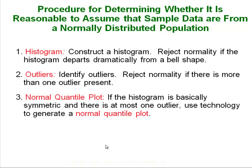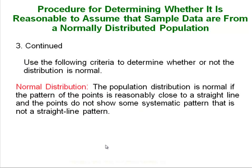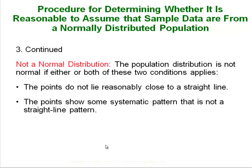The normal quantile plot is a more robust measurement of normality. You really want to do it with technology — you can do it by hand but it is a very tedious process. After you look at all that criteria, the population is considered normal only if the dots on the normal quantile plot are pretty close to a straight line and have no obvious pattern. If they are spread apart from the line or have an obvious pattern, the data is considered to come from a population that is not normal.